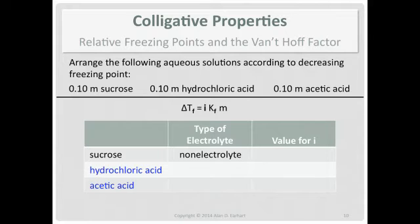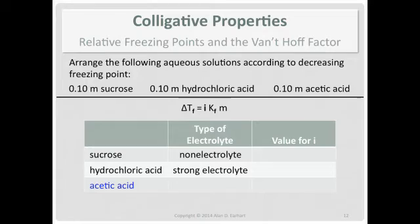Both being electrolytes helps me compare them to sucrose, but doesn't help me distinguish between the two. Think back to chem one: what type of acid is hydrochloric acid? It's a strong acid — it's a strong electrolyte and produces a lot of ions in solution. You memorized it from a short list of strong acids. Acetic acid is not in that list, so it's a weak acid, which means it's a weak electrolyte. Later we'll get better reasons for why some acids are strong and some are weak.